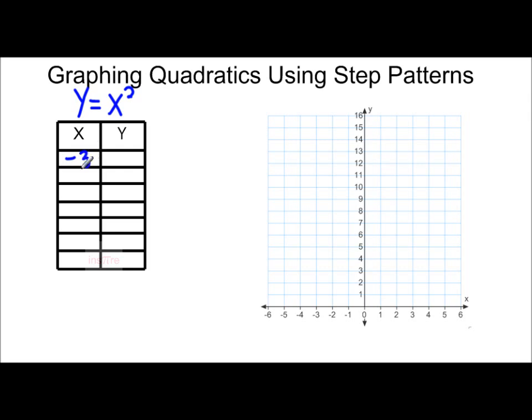If we started with x equals negative 3 and plugged that value in for x, our y is going to equal negative 3 squared, which is positive 9. If we plugged in negative 2 for x, our y value is negative 2 squared, which is positive 4. And if we put in negative 1 for x, we have negative 1 squared, which is positive 1. 0 squared is, of course, 0.